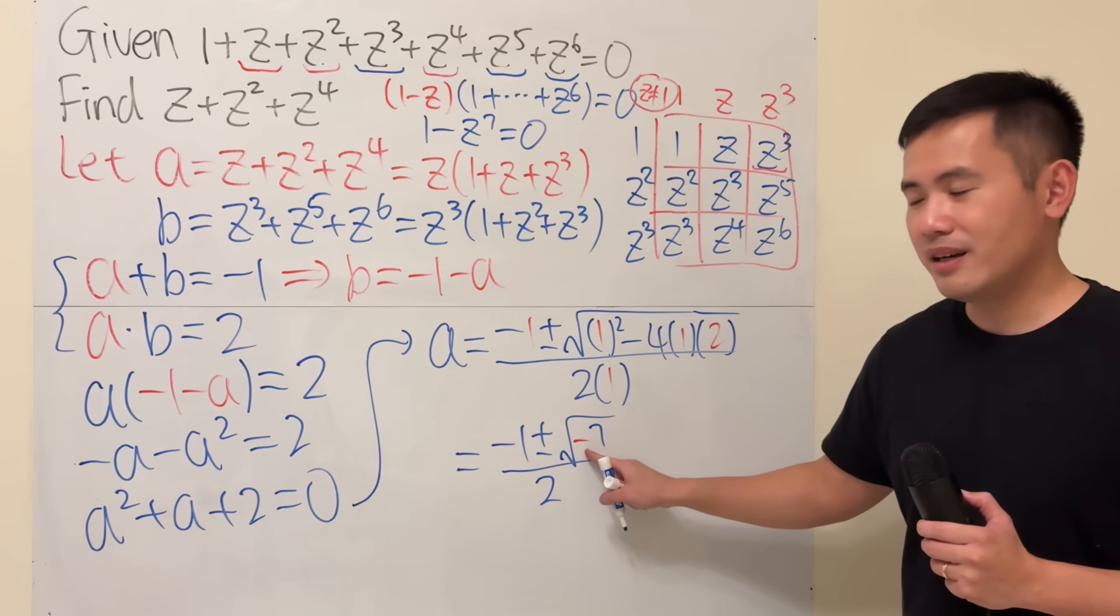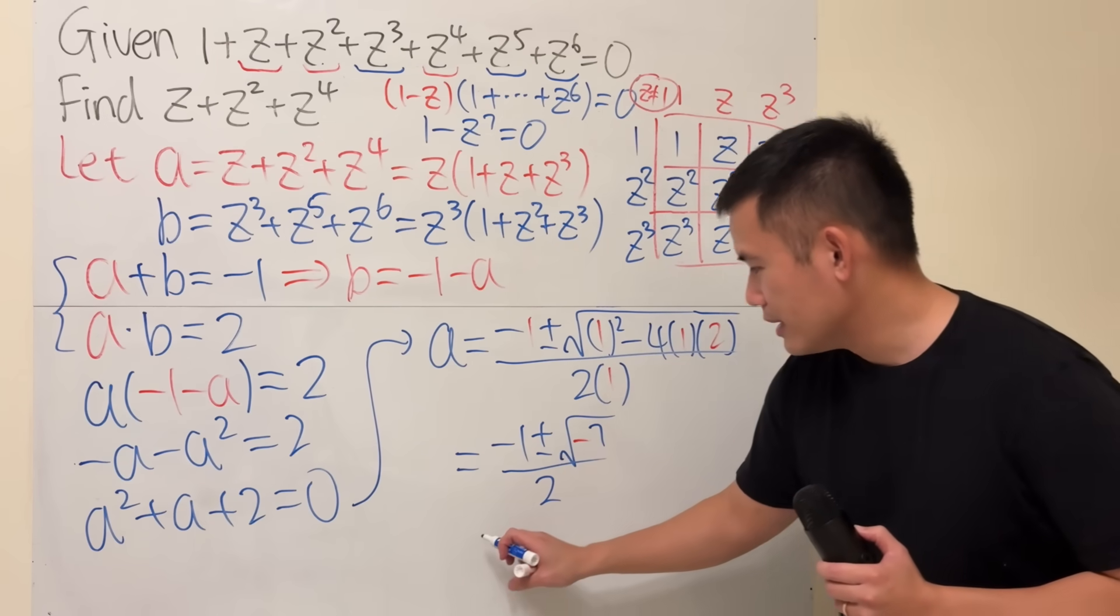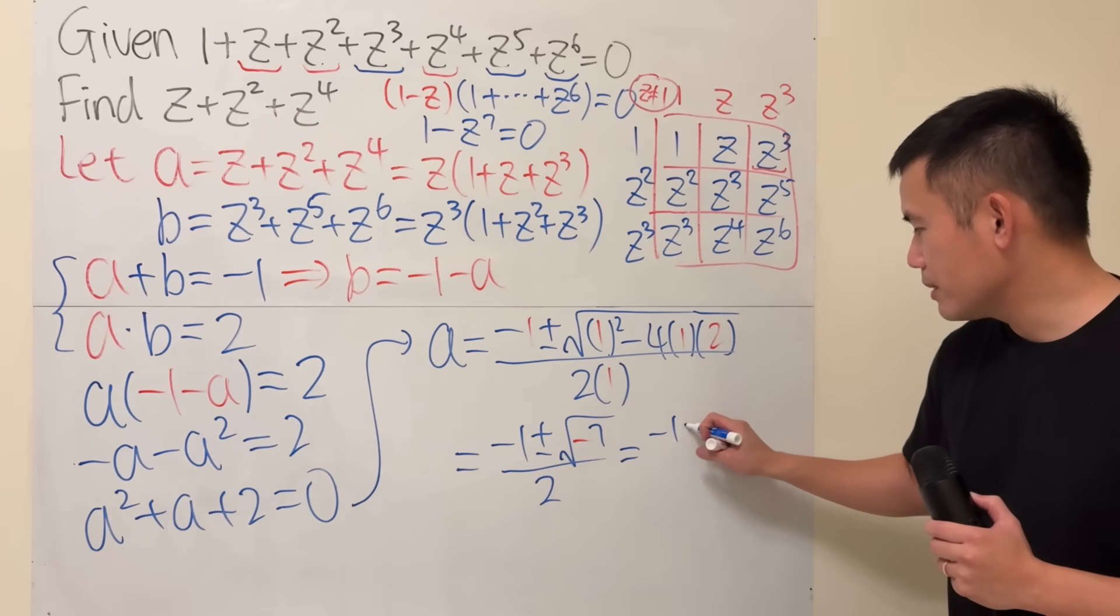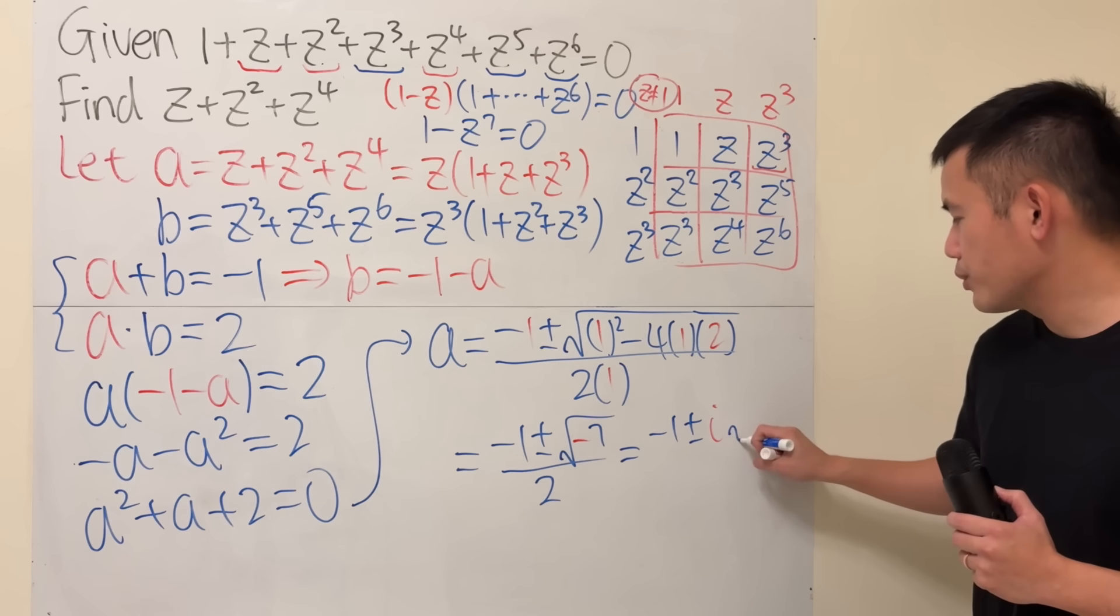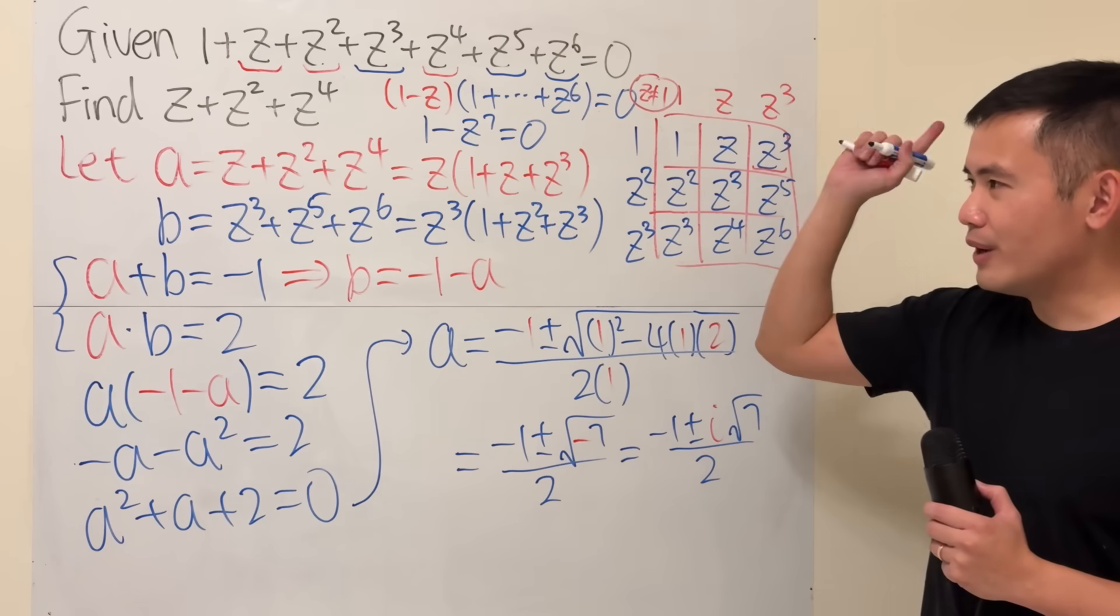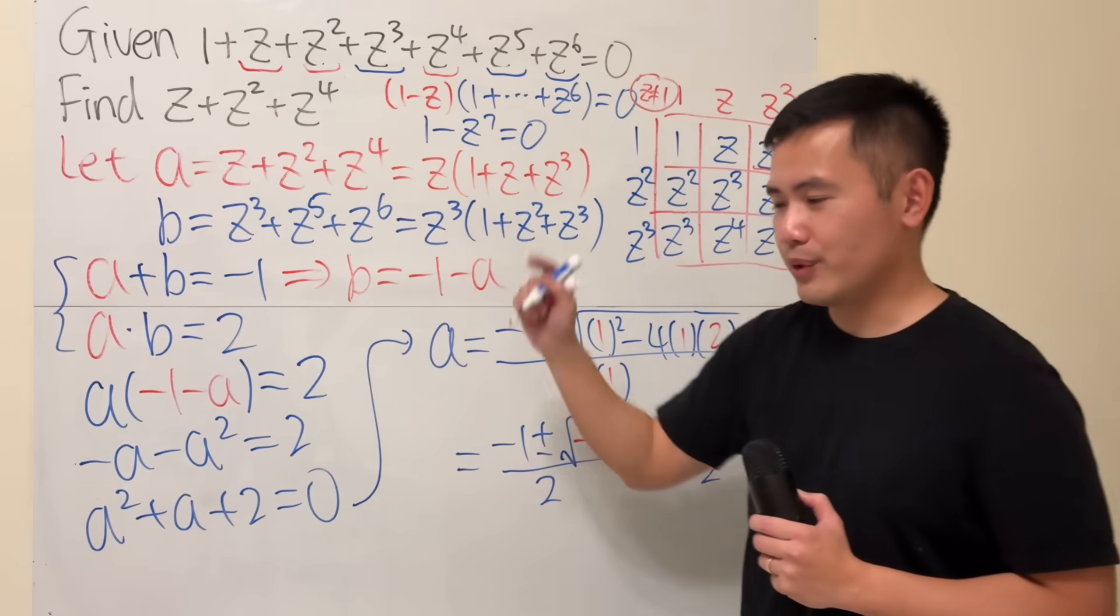Hey, that's going to be an imaginary i right here, right? So, ladies and gentlemen, I will write this down as negative 1 plus or minus i squared root of 7 over 2. a is equal to this.